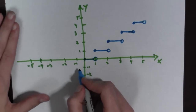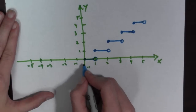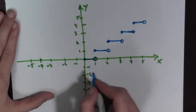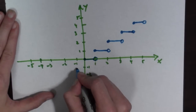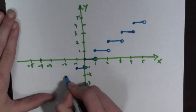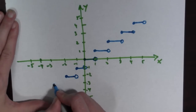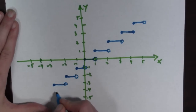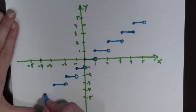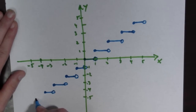And down here, if we're between negative 1 and 0, we're going to be down here. And as soon as we get to 0, pop up. So this is the greatest integer function that I'm plotting right now.